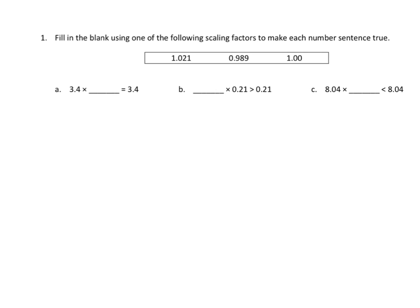Let's do some examples. If I look at the first expression, I have 3 and 4 tenths times something equals 3 and 4 tenths. The answer would be 1 — if I multiply anything times 1, I end up with a product equal in value. Next, something times 21 hundredths is greater than 21 hundredths, so we choose 1 and 21 thousandths. Finally, 3 and 4 hundredths times something is less than 8 and 4 hundredths, so we choose 989 thousandths.